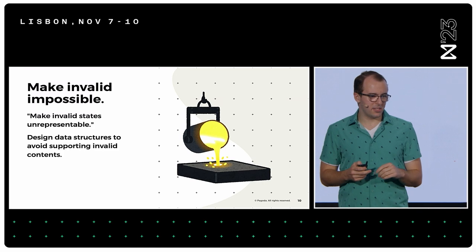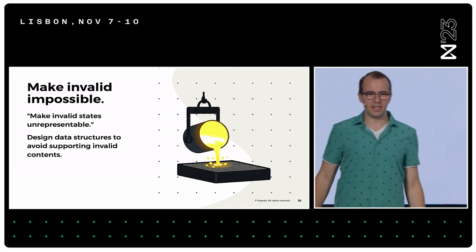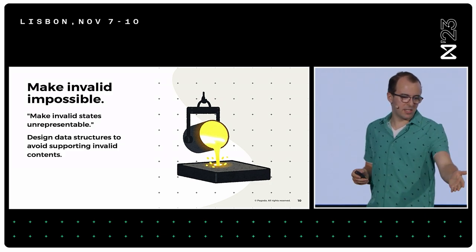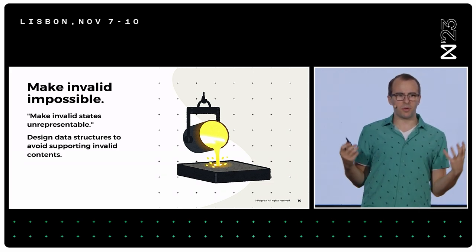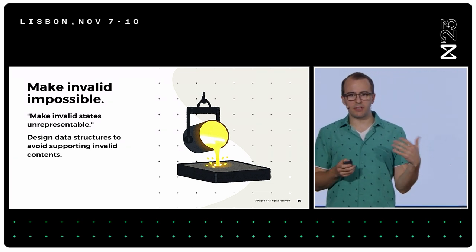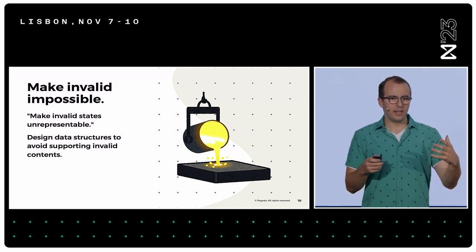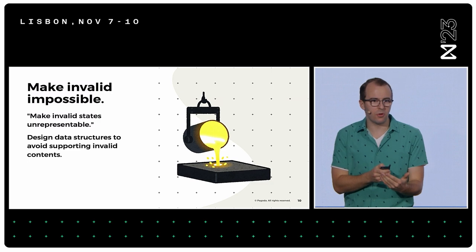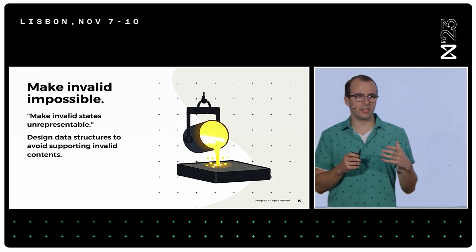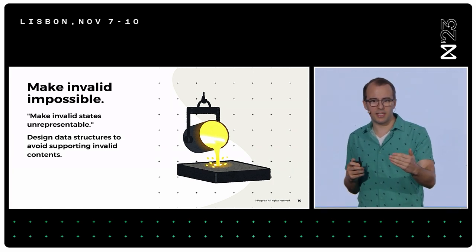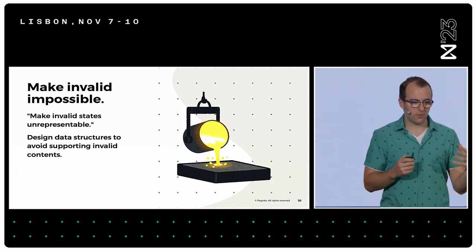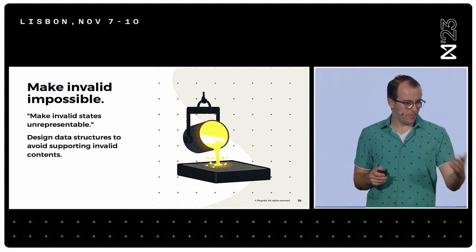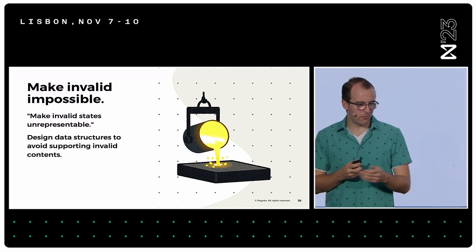Our second principle is to make the invalid impossible — or "make invalid states unrepresentable," which you can search for. If you think of the data structures in your smart contract as a mold, and your input data as something you pour into that mold, you want to design that mold so that no matter what data comes in, if it fits into the mold, it will be valid data. You want strong guarantees about your data — design your data structures, structs, and enums in a way to avoid supporting invalid contents.